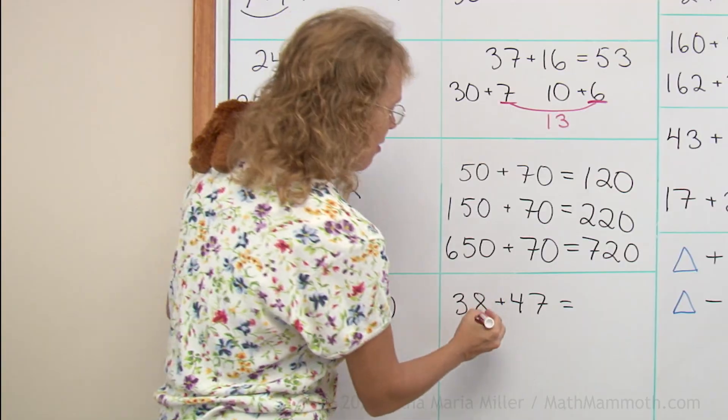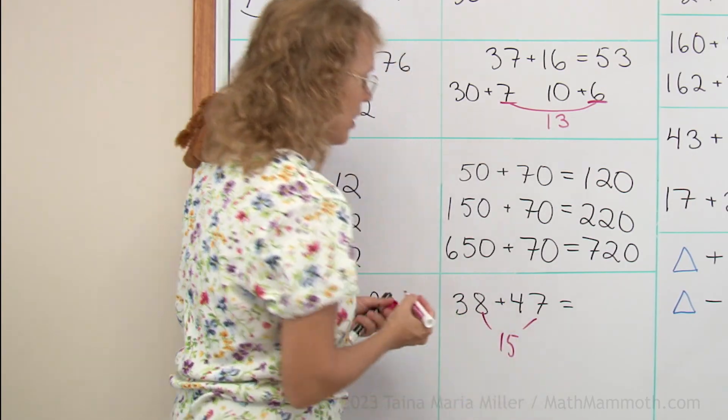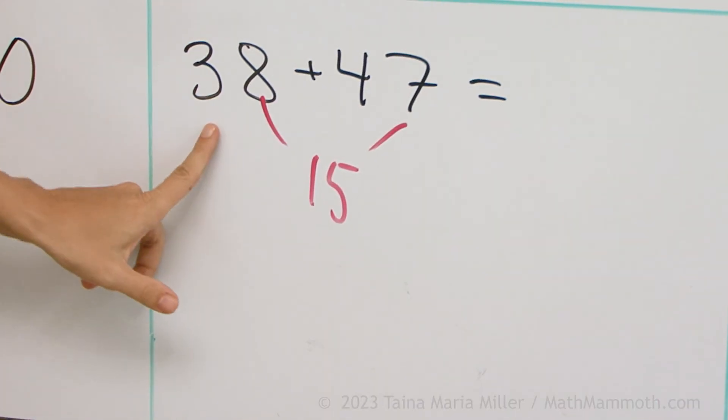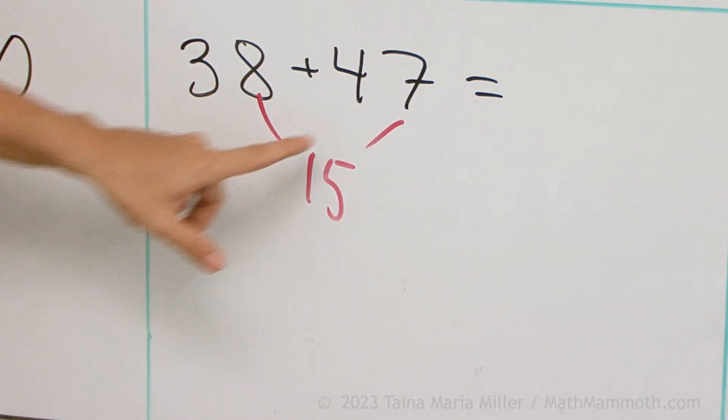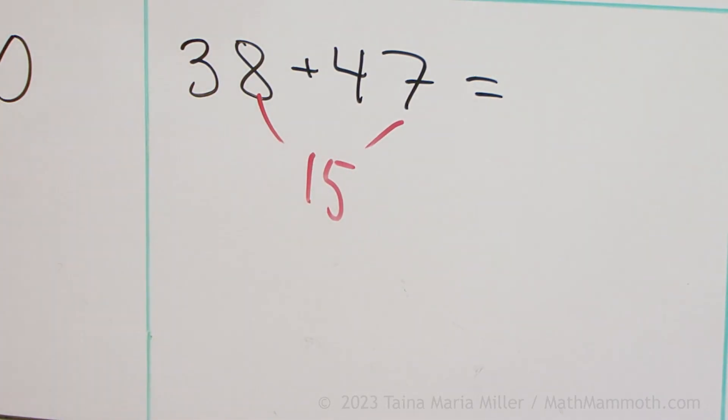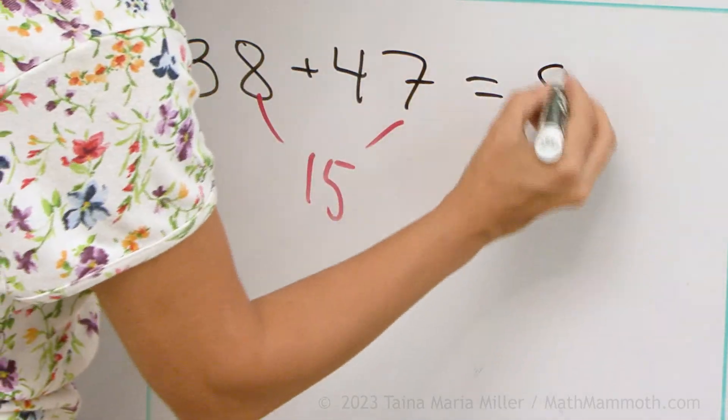Then over here, 8 and 7. If I add 8 and 7, I get 15. And then I have 30 and 40 and 15. So 70, 85, right?